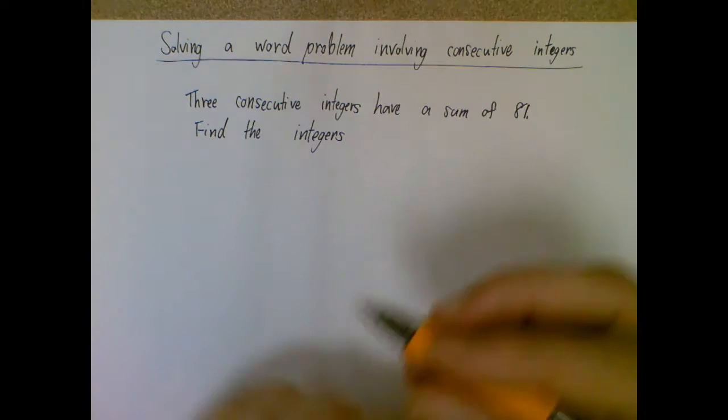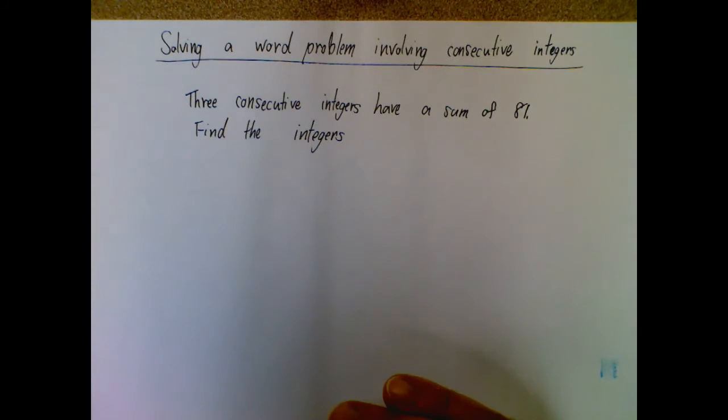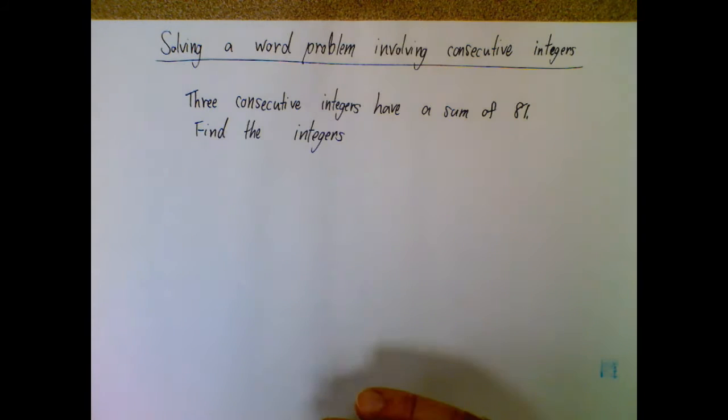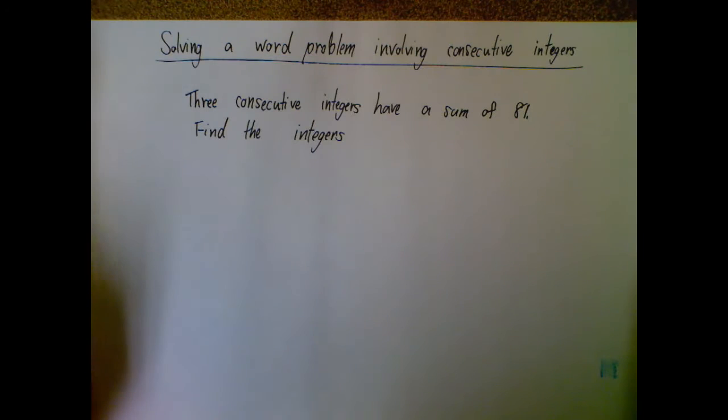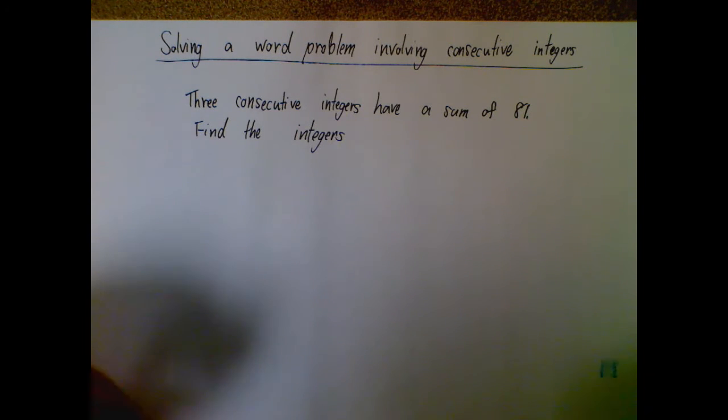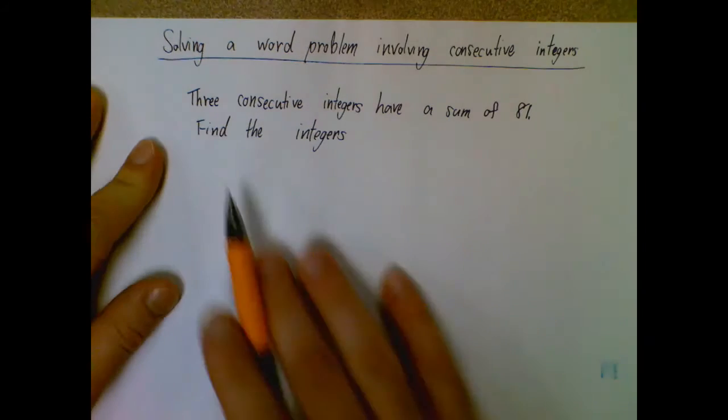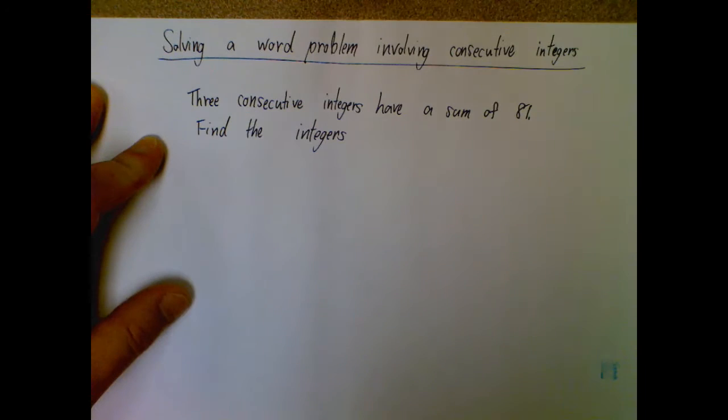So this one probably seems a little bit strange because it's not like a lot of the word problems we look at, but in principle it actually is going to do the same general idea. We're going to take an English idea and turn it into an equation and then solve it that way. So looking here we have three consecutive integers have a sum of 81 and we're just going to try and find those integers.